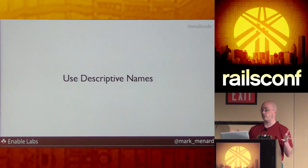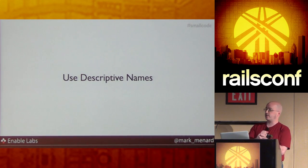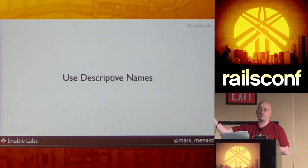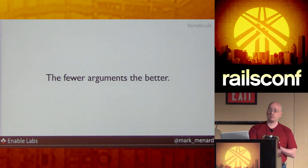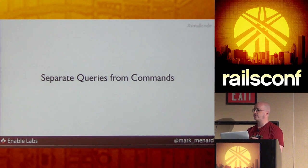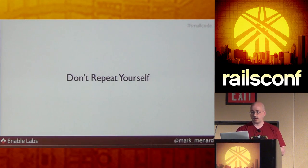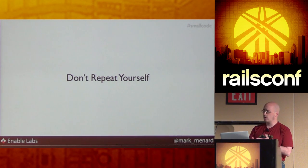I can't tell you how many times I've seen a comment on a method that was an excellent description of what the method did — if you just took those words and put them together, they'd make a fantastic method name, but the method is named something less descriptive. So use descriptive names. The fewer arguments, the better. My personal goal is zero arguments on methods — one is okay, two or three is when I start to think I've probably missed an abstraction. Separate queries from commands. And don't repeat yourself — it takes some judgment to know when to remove repetition, but you don't want to leave repetition over the long term because it will come back to bite you.